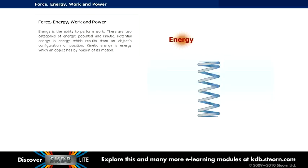Energy is the ability to perform work. There are two categories of energy, potential and kinetic. Potential energy is energy which results from an object's configuration or position. Kinetic energy is energy which an object has by reason of its motion.